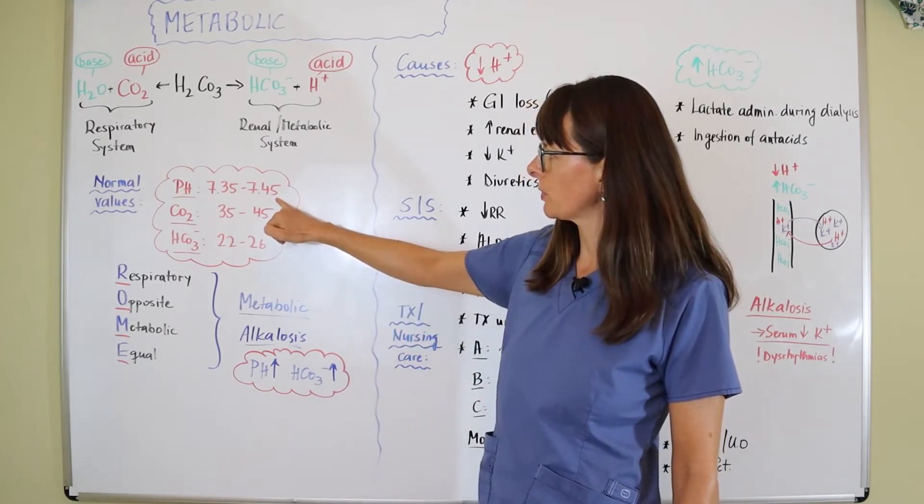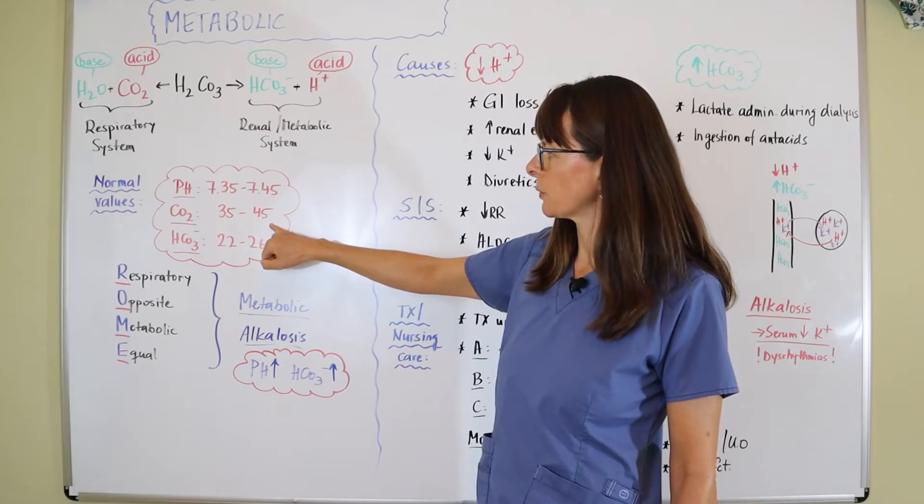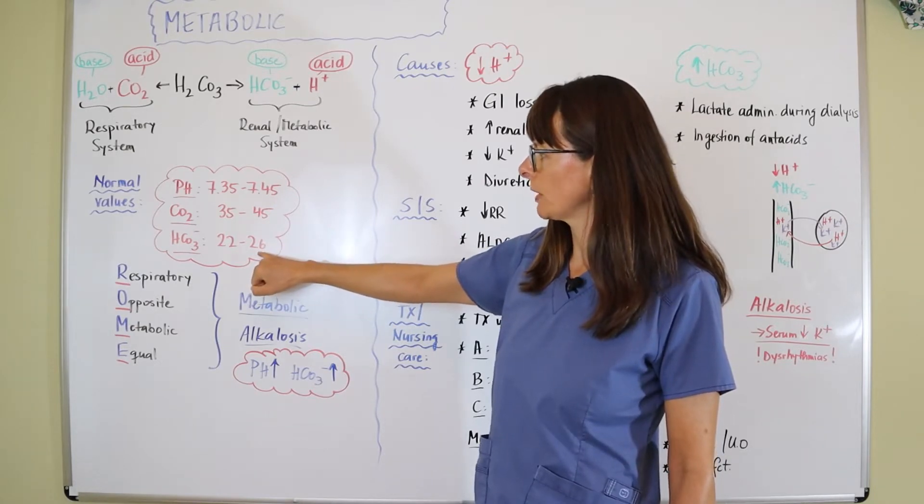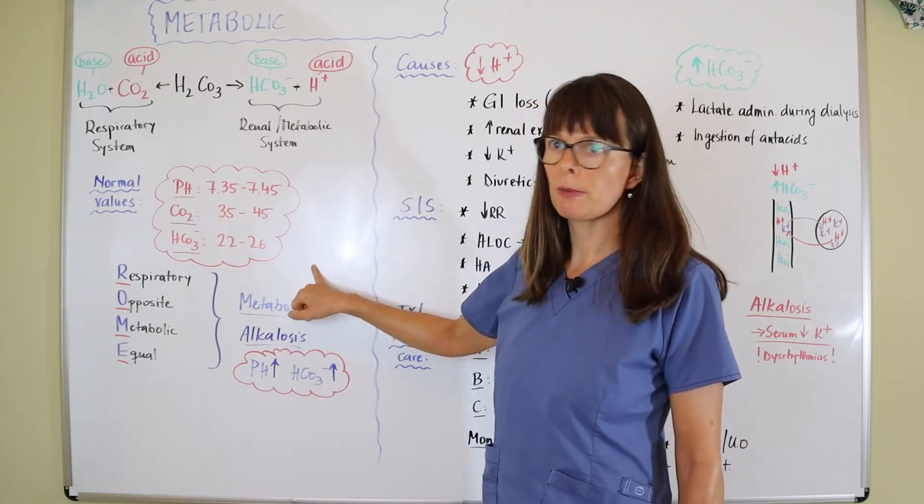Normal pH is 7.35 through 7.45, normal CO2 35 through 45, normal bicarbonate 22 through 26. These are just numbers you'll have to memorize.